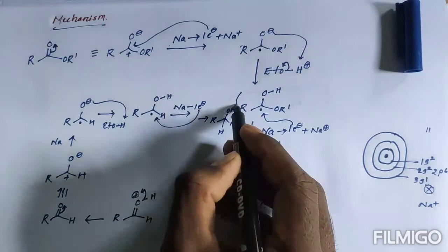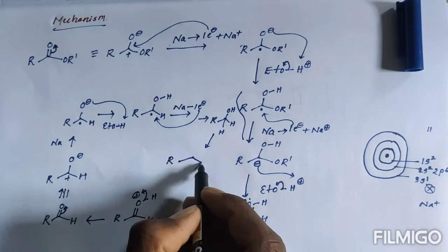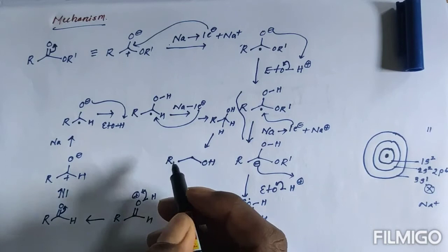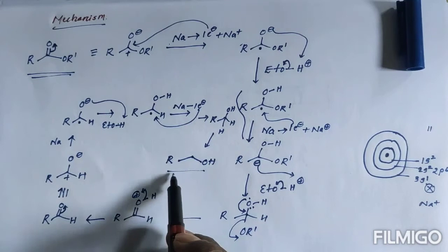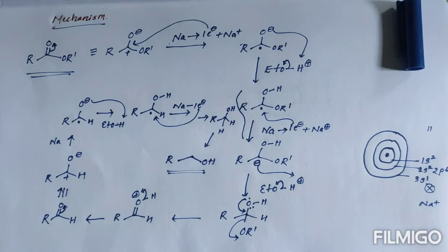The final structure is R–CH₂–OH because the carbon now has two hydrogens attached. We have converted the ester into a primary alcohol. This is the complete mechanism of the Bouveault-Blanc reduction — it is long but consists of simple repeated steps.